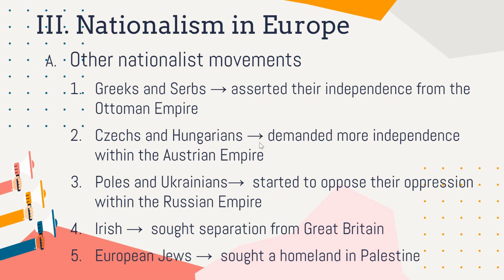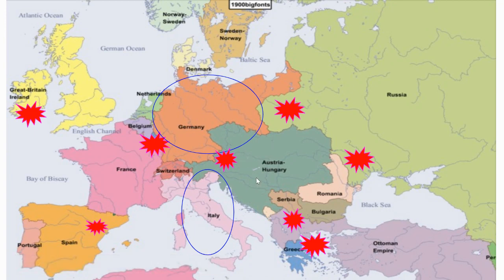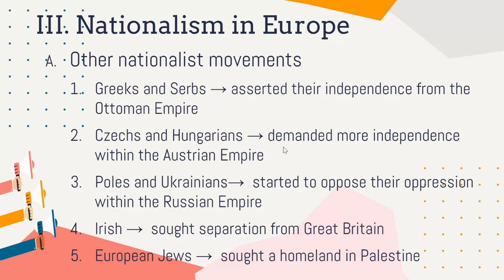The Czechs and Hungarians demand more independence within the Austrian Empire, but they're not going to be very successful. The Czechs — this area that will become Czechoslovakia — and this area that will become Hungary — people in the western part of the Austro-Hungarian Empire are tired of it and want to break away. The Czechs say: we have our own identity, we speak Czech, we practice Czech customs — we are not Austrian, so why are we part of the Austrian Empire?